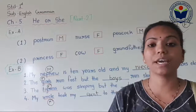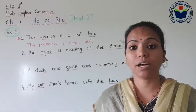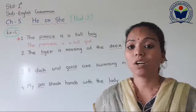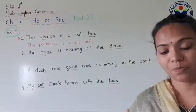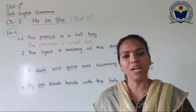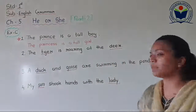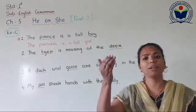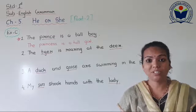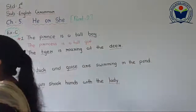After completing Exercise B, it's time to start Exercise C. Are you ready? Let's start. Rewrite the following sentences using the opposite male or female naming words of the underlined words. The first one is done for you. Wherever the word is underlined, if it is male, change it to female, and if female, change to male.